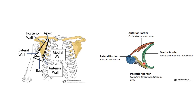The medial border is formed by the ribcage and serratus anterior, and the lateral by the intertubercular sulcus of the humerus. The anterior and posterior borders are muscular. The anterior border consists of the pectoralis major and minor, and the posterior border consists of the subscapularis, teres major, and latissimus dorsi.